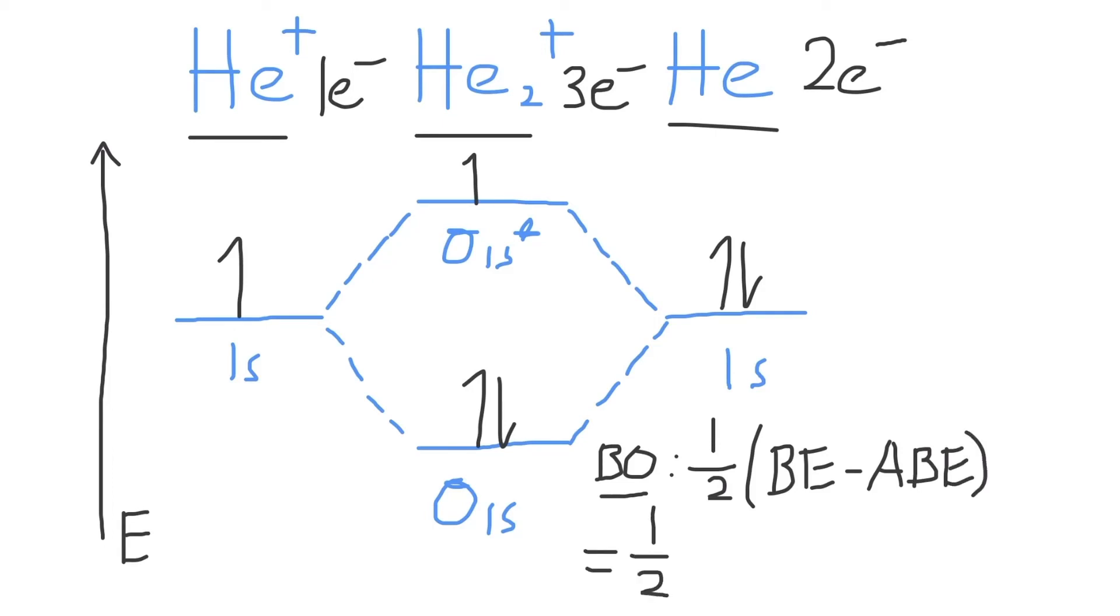Therefore, in He2+, we can find that the bond order is equal to one-half times the number of bonding electrons, which in this case are present in the σ1s molecular orbital, so we have two of them, minus the number of antibonding electrons in the σ1s star molecular orbital, of which there's one.